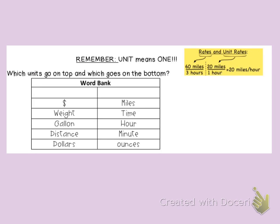We need to remember that a unit means one. So when we are talking about unit rates and we have ratios, we want the denominator in our unit rate or ratio to be one. So which unit goes on top and which one goes on bottom?